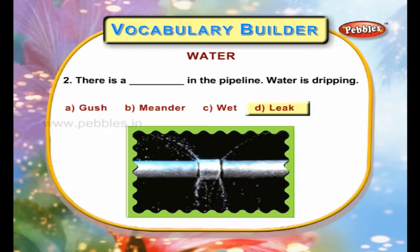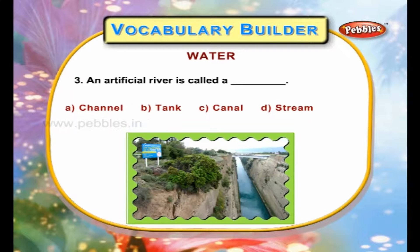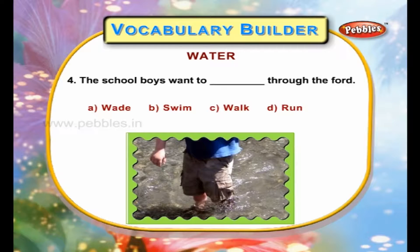There is a leak in the pipeline — water is dripping. An artificial river is called a canal. The school boys want to wade through the ford.